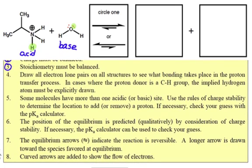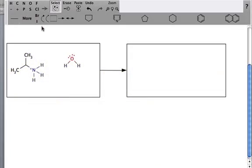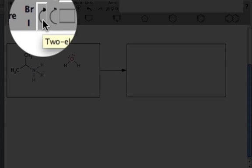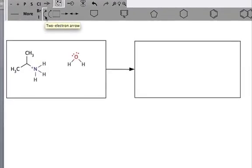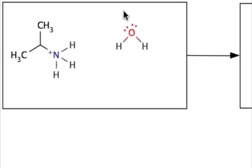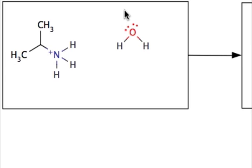Now let's go over how to properly draw your arrows within ACE Organic so ACE can recognize exactly what you're trying to do. Step one is click on the electron source. Click on the two-electron arrow — be sure you click on the two-electron arrow — and start on where the electrons come from. In this case, our base is going to be the lone pair on the oxygen of water. Hover over that atom and make sure you have that blue circle to designate that atom's lone pair as the start of your electron flow.